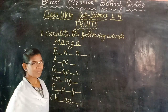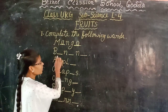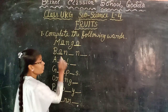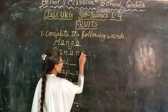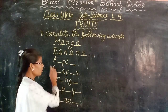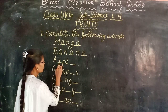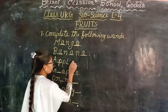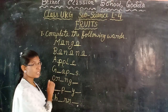Good. Now next one — which fruit starts with B? Banana. So we will write: A-N-A-N-A. Banana. Next — which fruit starts with A? Apple. P is missing — double P, L, E is missing. Apple.